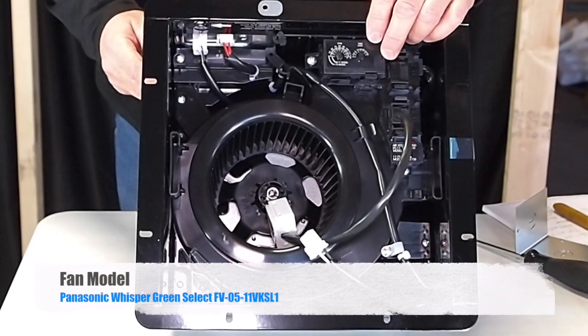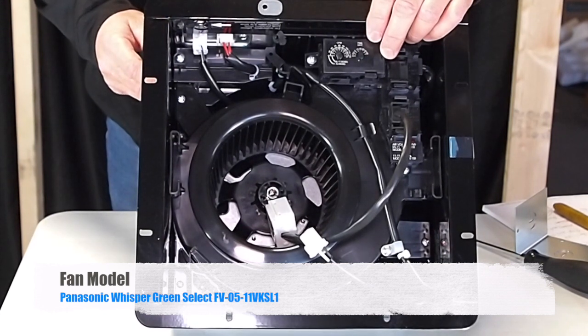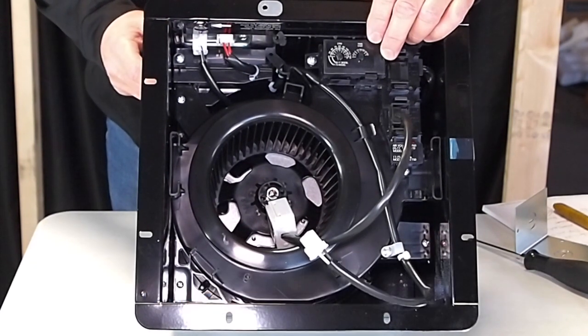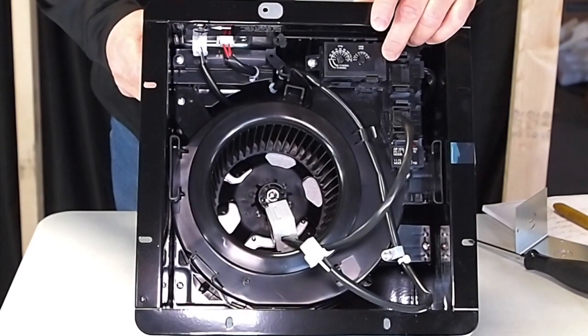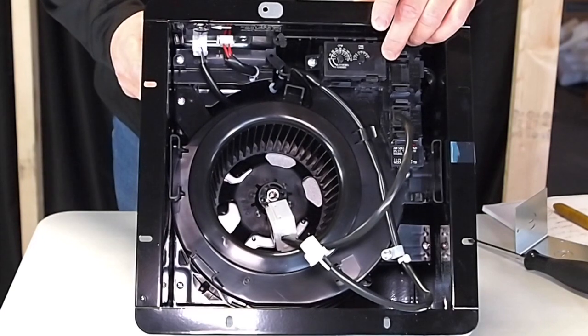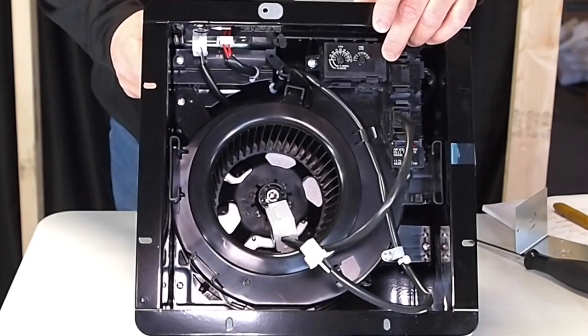The fan we are wiring is a Panasonic Whisper Green Select FV0511VKSL1. This fan has a multi-speed timer pre-installed. The scenario we have is a one gang box with a single pull switch controlling the fan and light at the same time.